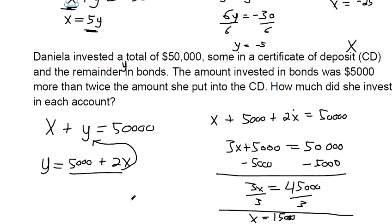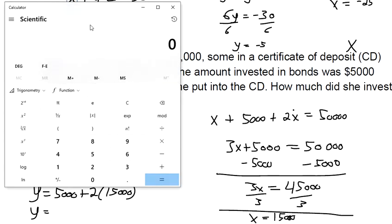And then to find out what y is, we have to plug 15,000 in for x. You could have done it in the top equation too. It's actually quicker if you plug in 15,000 in the top equation. Or you could think of it like this.